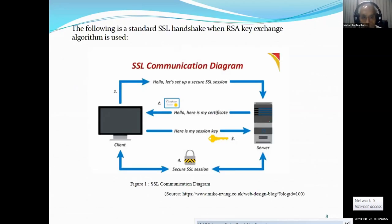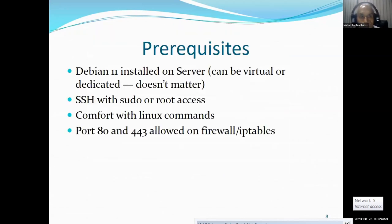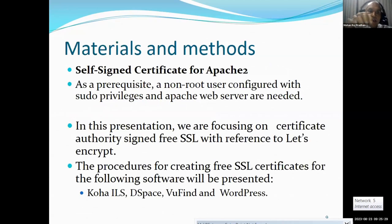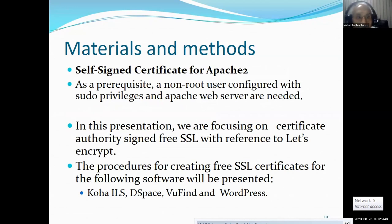This shows how SSL goes from the server to the user. Here I am discussing SSL being installed in Debian 11. The prerequisites needed are: Debian 11, SSL with sudo or root access, comfort with Linux commands, and ports 80 and 443 allowed on the firewall IP tables. Additionally, a non-root user configured with sudo privileges and an Apache web server are needed. In this presentation, we are not discussing the self-signed certificate but SSL related to a domain name.